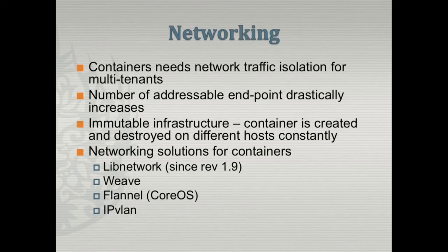The next thing is networking. Networking is important because of the specific nature of containers — we are seeing lots of endpoints that need to talk to each other, and the network should be able to provide multi-tenancy for isolation. In Docker revision 1.9, we had a major breakthrough: something called libnetwork, which provides an interface for external third-party vendors to provide networking solutions for containers. These are some of the alternatives — most of them use overlay networking.